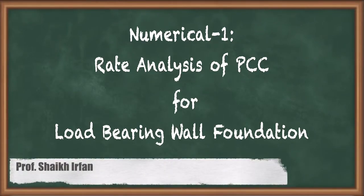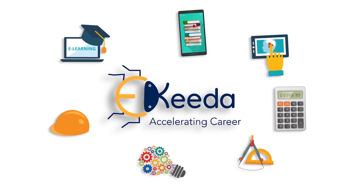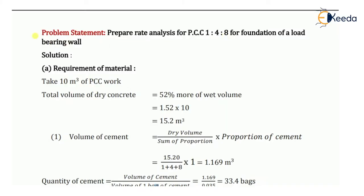Hello everyone. In this video we are going to see rate analysis for PCC work, that is plain cement concrete. The proportion we are using for the PCC will be 1:4:8. The problem statement says: prepare a rate analysis for PCC, plain cement concrete 1:4:8, for the foundation of a load bearing wall.